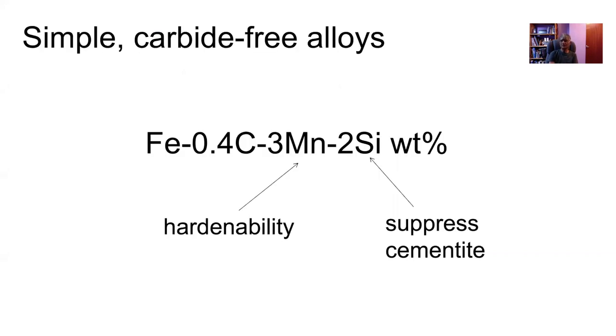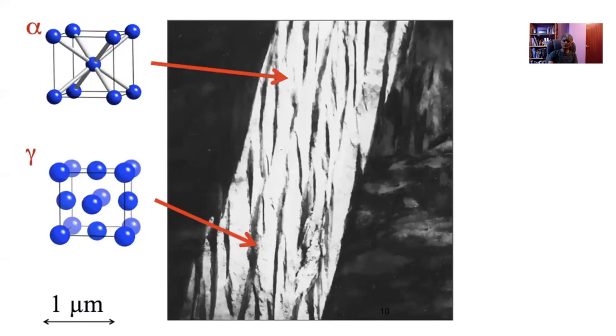We start by looking at whether we can use this steel in railway lines. It's a very simple chemical composition - silicon is there to suppress the cementite but we also need some hardenability to avoid the elevated temperature transformations. When we isothermally transform this, we obtain this lovely structure where we have fine bainite platelets with retained austenite films in between. It's a composite microstructure which ought to have good properties. It doesn't have any cementite.